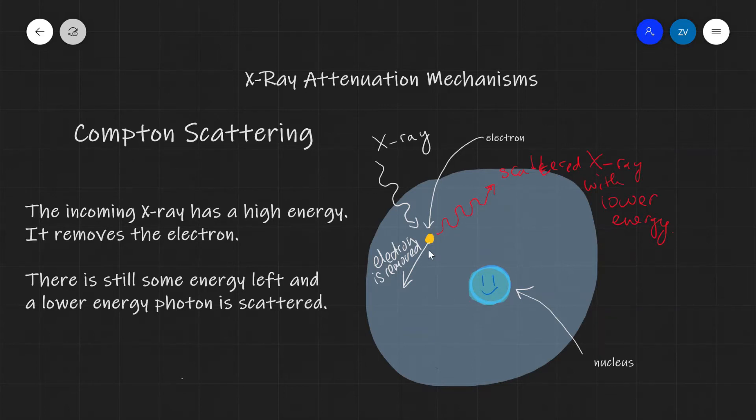But once again, Compton scattering: the X-ray has more than enough energy to remove the electron, the electron is removed, there's still some energy left into the system. And there is a scattered photon with less energy, with a higher wavelength, with a lower frequency.